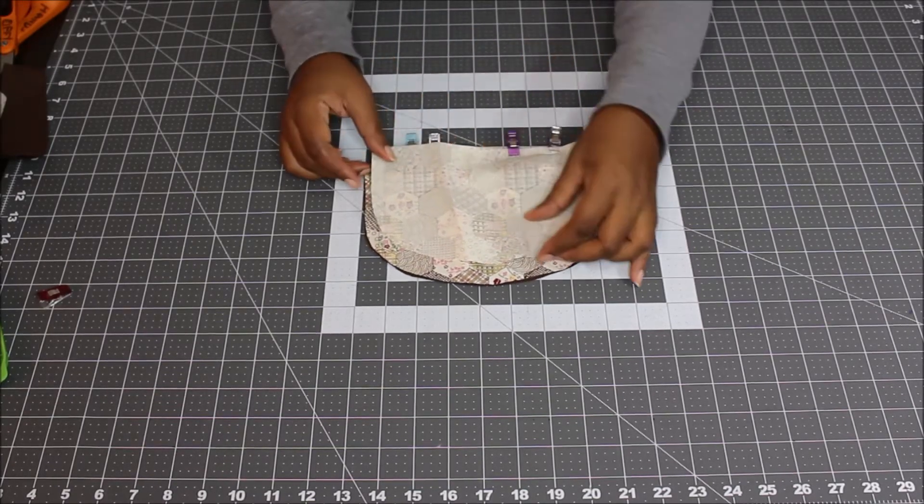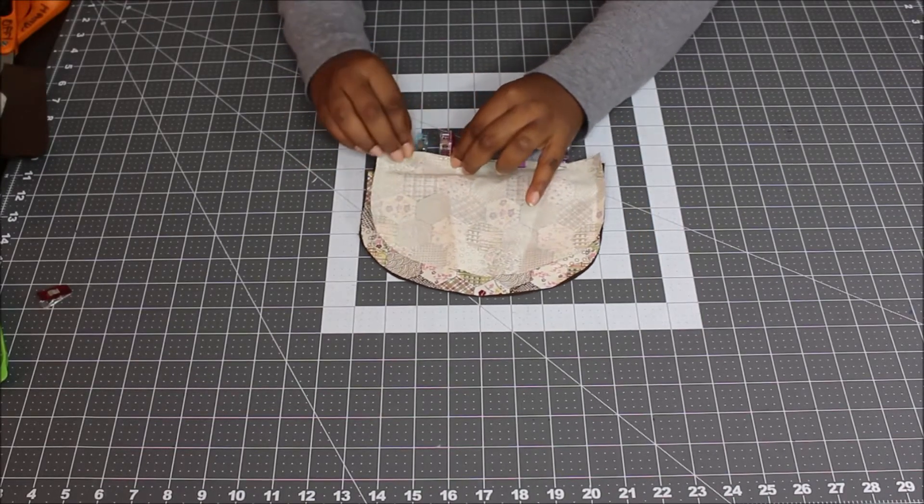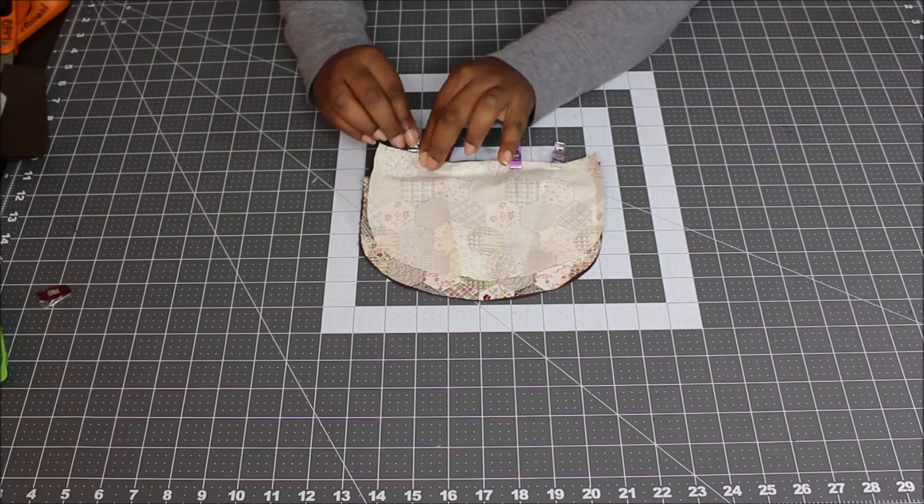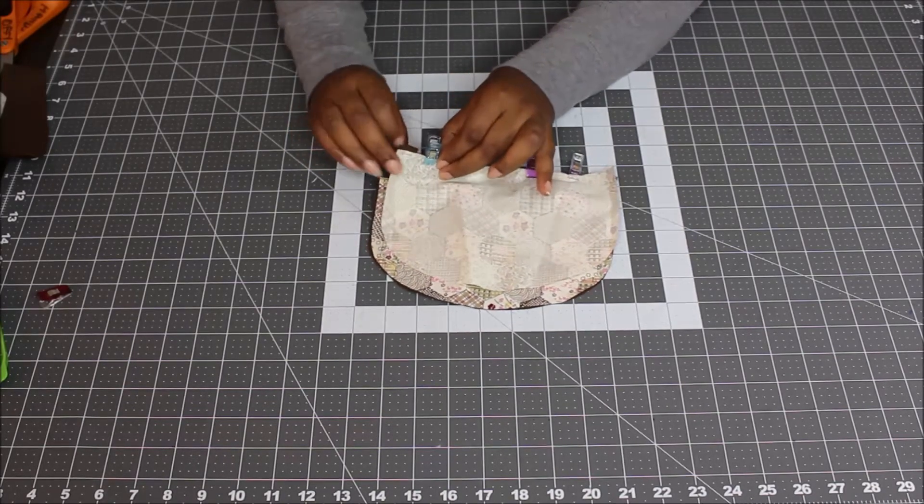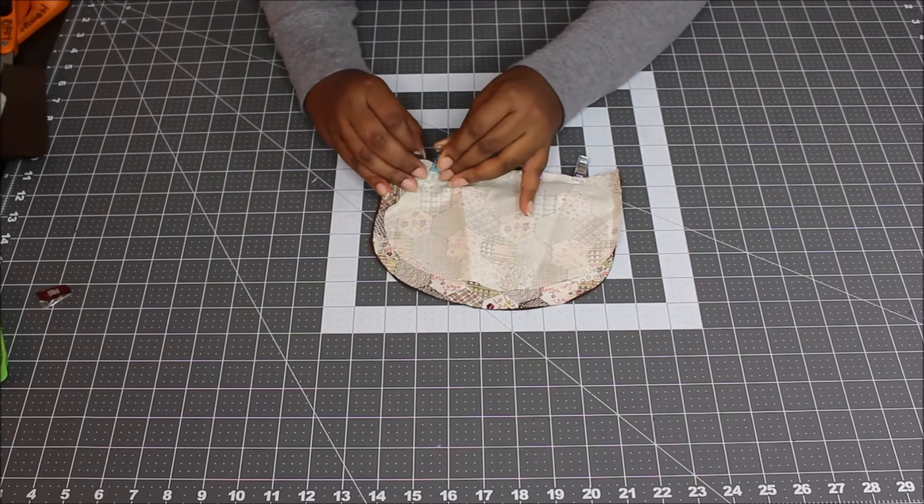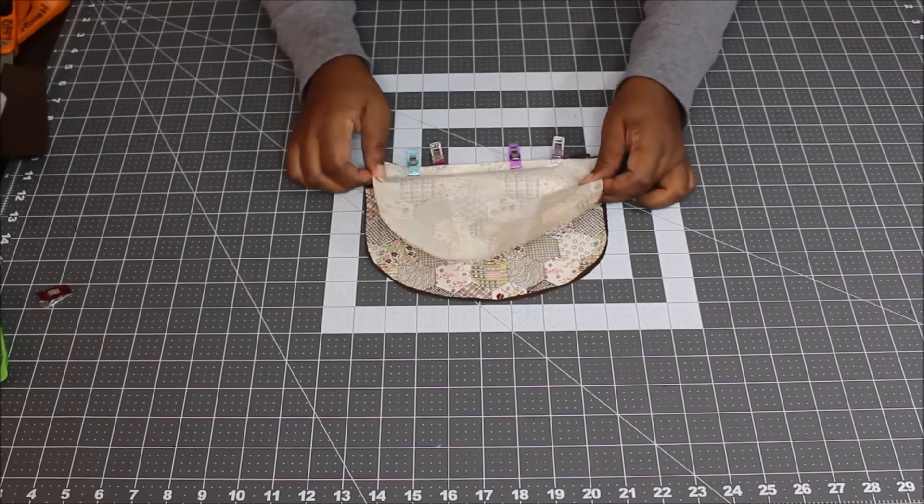Once you do that, take it to the sewing machine and sew down that edge just like you did the other side. You flip it open and you top stitch just like you did the other side.